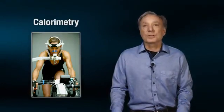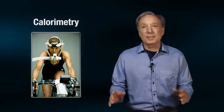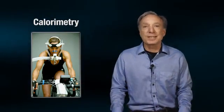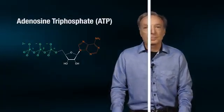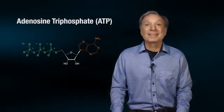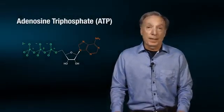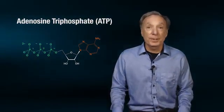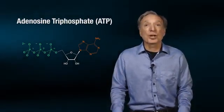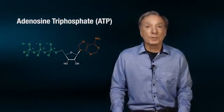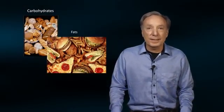Module 1 will include a discussion of calorimetry, which is a technique used to measure an individual's energy expenditure and metabolic rate during exercise. The significant contribution of adenosine triphosphate, commonly referred to as ATP — the chemical energetic currency required for muscle to contract and do work — will be addressed. We will complete Module 1 discussing the significant contributions of carbohydrates, fats, and proteins to the energetics necessary to sustain working muscles.